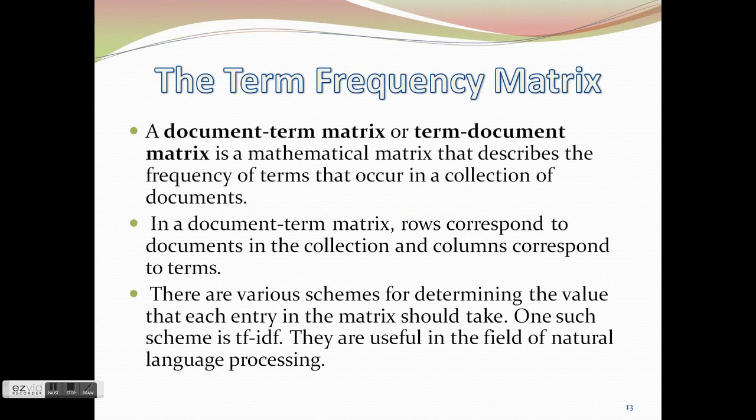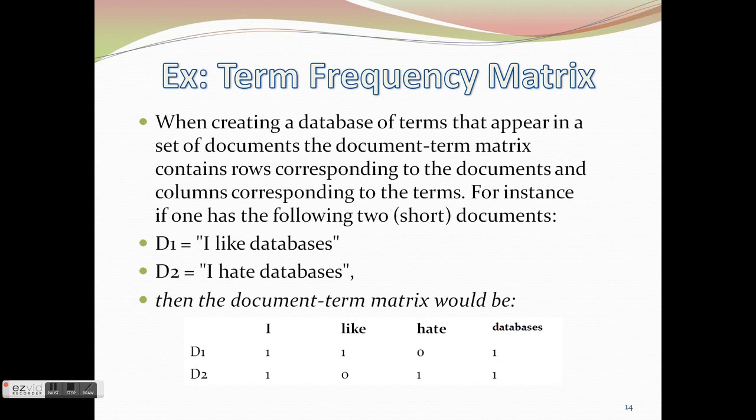The next step is to construct the term frequency matrix. The term frequency matrix is a term document matrix where the rows represent the number of documents and the columns represent the number of words. The following example indicates how a term frequency matrix can be created where the entries represent the number of times that word occurs in the particular document.